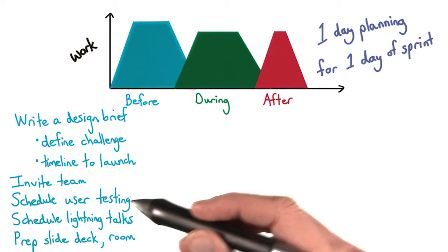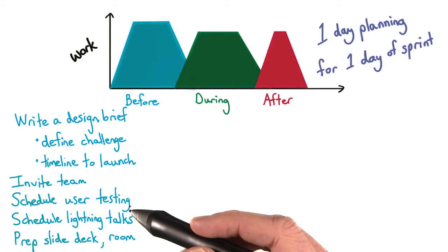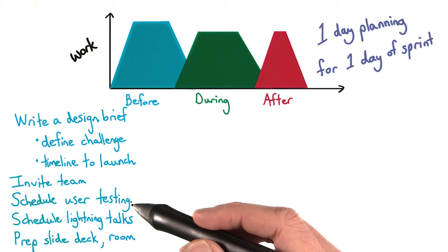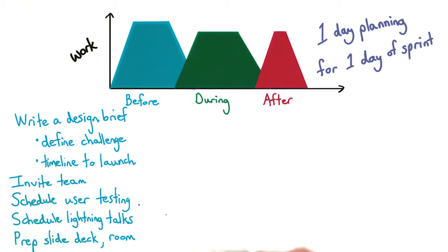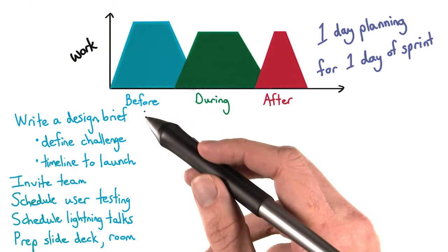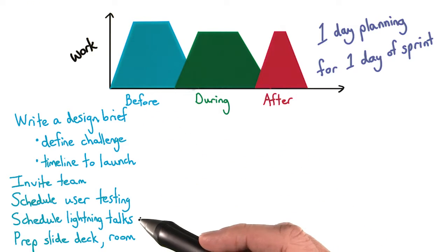One of the key parts of a design sprint is user testing. You need to schedule when users will take a look at whatever you create from the design sprint. The user testing will keep you accountable, validate product ideas, and push you, and perhaps your team, towards showing users something by the end of the design sprint. Now, this might not make a whole lot of sense right now, but I guarantee you it will by the end of this lesson. Finally, before the sprint, you'll also want to schedule any lightning talks, more on this later. And you'll want to prep the slide deck that you'll use in the sprint, and any room and special materials.